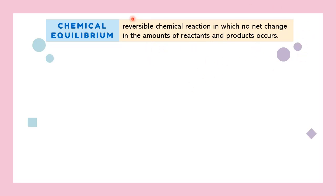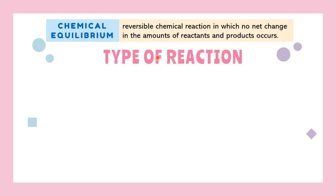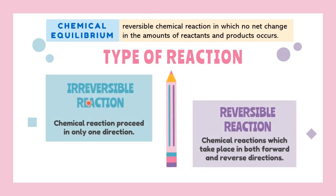Not all reactions happening in this world are capable of achieving this equilibrium. This means there should be more than one type of reaction you need to know. For any chemical reactions, reactants will always be on the left-hand side while products go on the right-hand side. So there are two types of chemical reactions: irreversible and reversible.